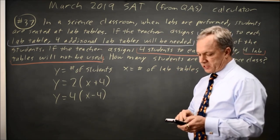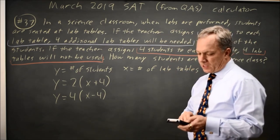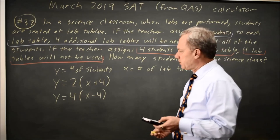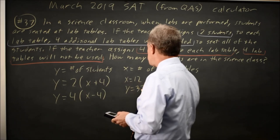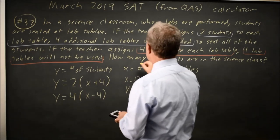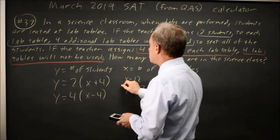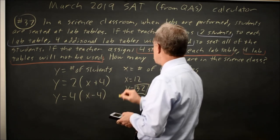And I find the intersection, hit enter three times, and I get x equals 12, y equals 32. And they're asking for the number of students, how many students. Students are y, so that would be 32.